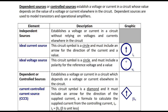The first type of dependent source is a current controlled current source or CCCS. The circuit symbol is a diamond and it must include an arrow because it's a current source, so that you know the direction of the supplied current. There is also a formula to calculate the supplied current from the controlling current IX. The formula is beta IX, where beta is the gain and it is unitless.